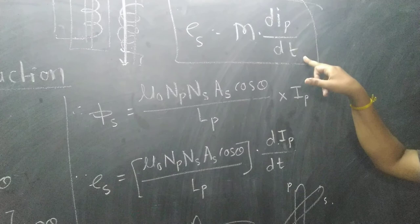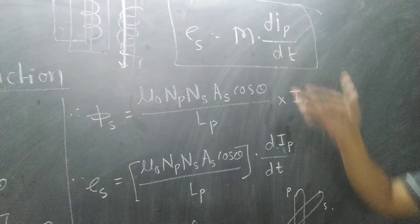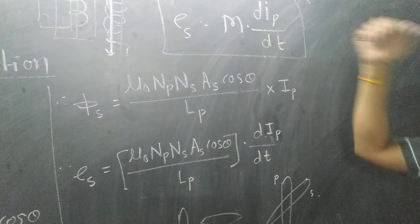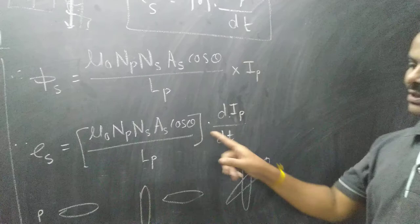M is called mutual inductance. Its dimension is the same as self-inductance, and the unit is Henry. So this gives you the dimensions to calculate. If you have to calculate mutual inductance, you calculate using these figures.